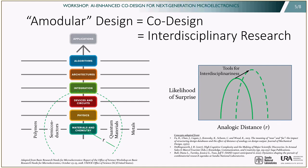Now, amodular design is essentially what we mean by co-design. Co-design is, like amodular design, the disrespecting of protocols between modules, between knowledge domains. Co-design is an anything-goes sort of design in which multiple knowledge domains evolve simultaneously. And when multiple knowledge domains co-evolve, we call that interdisciplinary research. So co-design is also essentially interdisciplinary research.